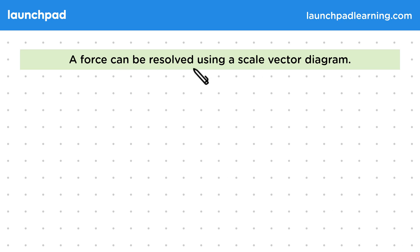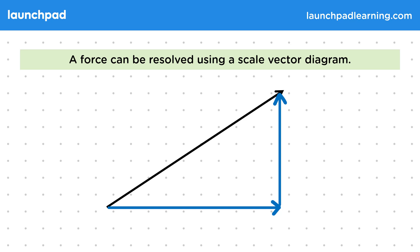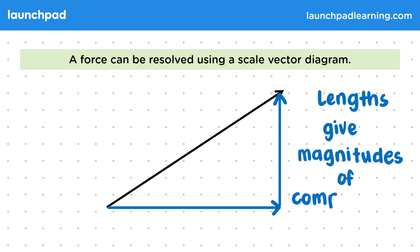A force can be resolved using a scale vector diagram. A scale vector diagram shows the force vector arrows with lengths proportional to their magnitude. We can draw the components on the scale vector diagram by making it into a right-angled triangle with the original force. This shows the original force is a resultant of the components as they have the same start and end point in the diagram. The lengths give the magnitudes of the components and we can compare the lengths to the scale to get the original force.